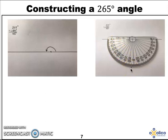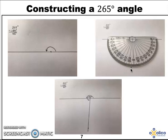I make my mark and I join the starting point and the mark that I've made with a ruler and I can label that big angle 265 degrees. I hope this has made sense and you've understood it.